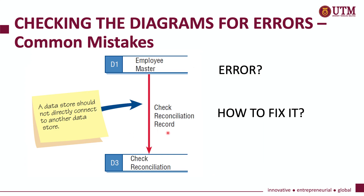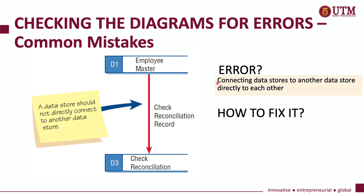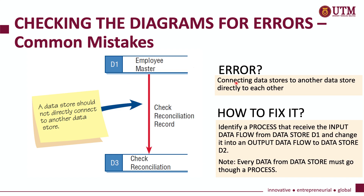Another common mistake in a DFD is when you have a data flow going directly from one data store to another data store. To fix this error, identify a process in between, where the process receives input from D1, processes it, and then outputs to data store D3. Every data flow from a data store must go through a process.